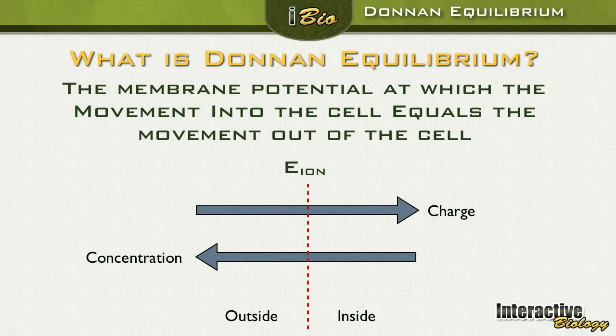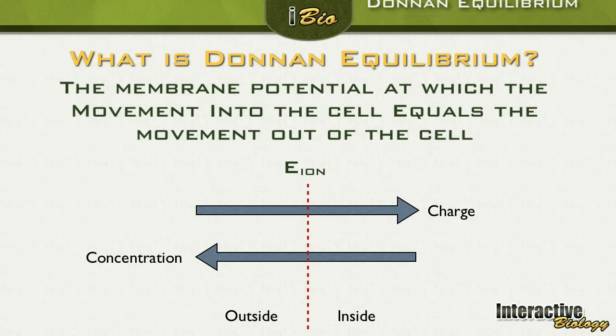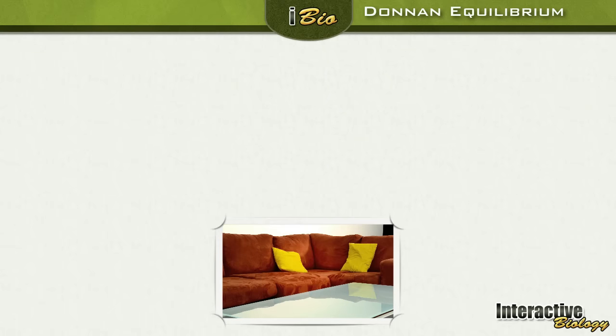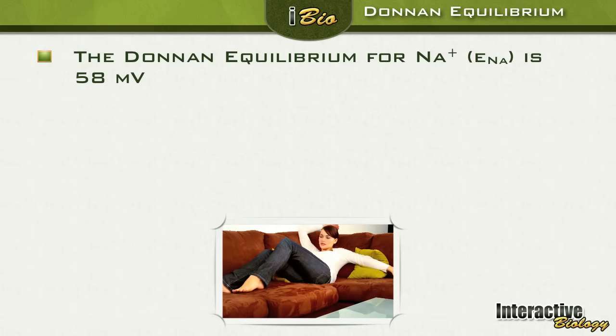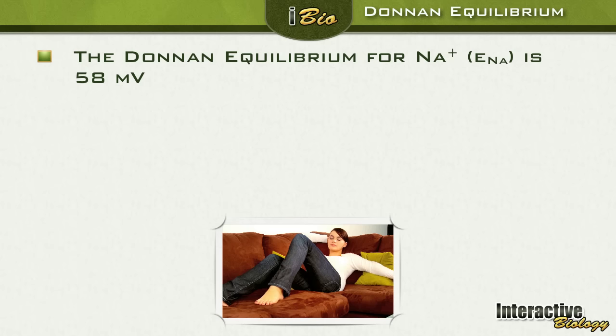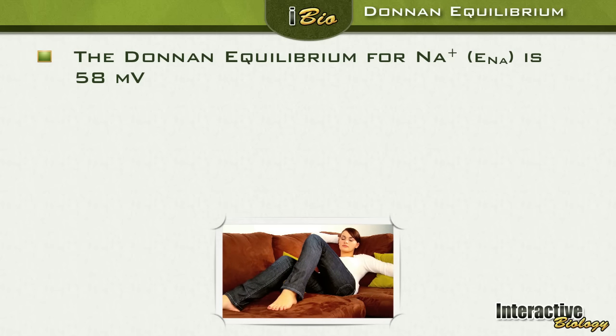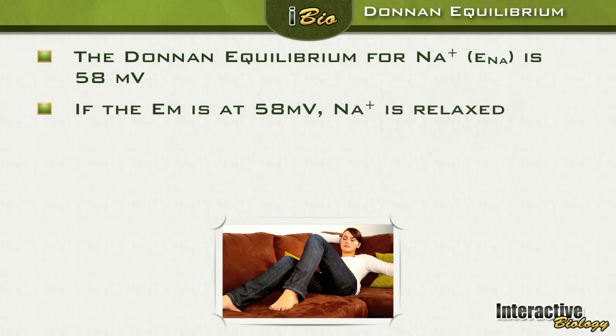So sodium is moving in because of charge and it's moving out because of concentration. At a certain membrane potential — a certain charge across the membrane — the movement into the cell and out of the cell is going to be equal. The Donnan equilibrium for sodium ion, or E sub Na, is approximately 58 millivolts. So if the membrane potential is at 58 millivolts, sodium ion is relaxed — it's chilled.